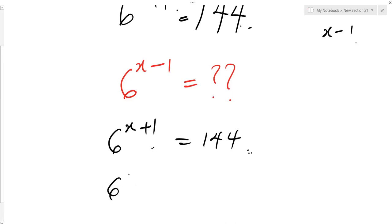So it says 6 to the power of x plus 1 times 6 to the power of minus 2 equals 144 times 6 to the power of minus 2.